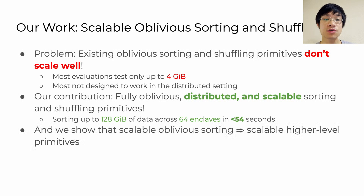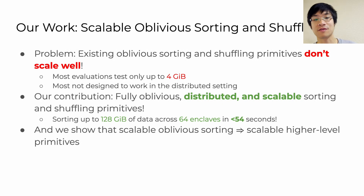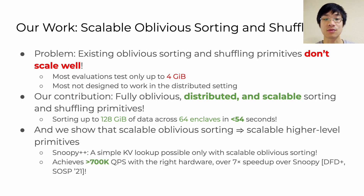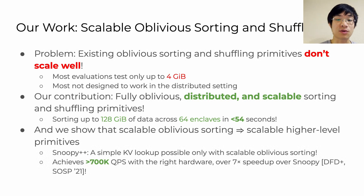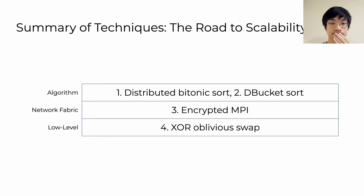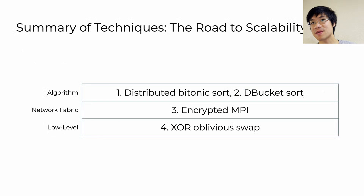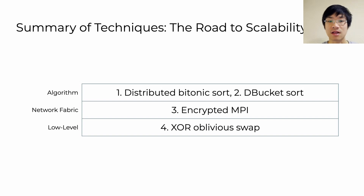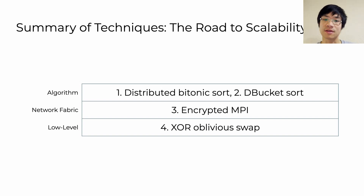At the end, we're also going to show that our new oblivious scalable sorting primitive can be used to enable new higher-level primitives as well, and we achieve a nearly 7x throughput increase over Snoopy with the right hardware. The subject of this talk is going to be four key optimizations that we made across different layers of design and implementation: algorithmic, network level, and low-level or assembly level.